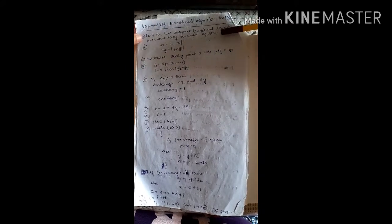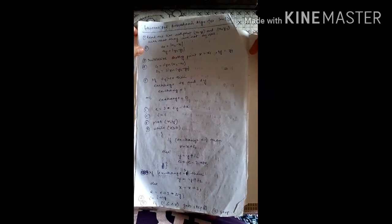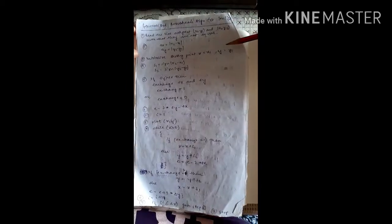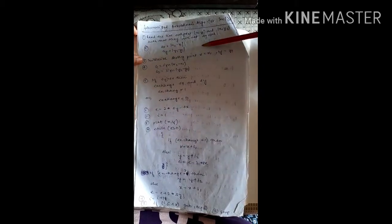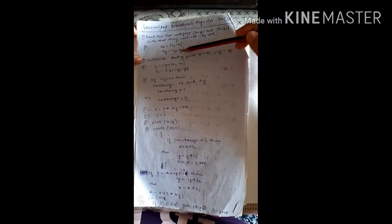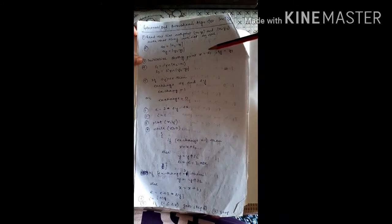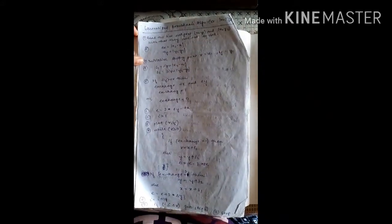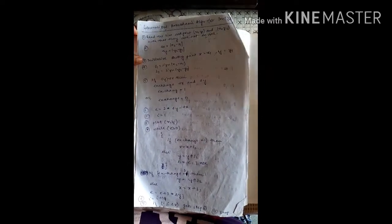Now what does the algorithm say? The first step says to read the line endpoints x1 y1 and x2 y2 such that they are not equal. In the second step we need to find the value of delta x, that is x2 minus x1, and the value of delta y, that is y2 minus y1. In the third step we initialize the starting point x as x1 and y as y1, just like the previous case. So we will start plotting from the start point.